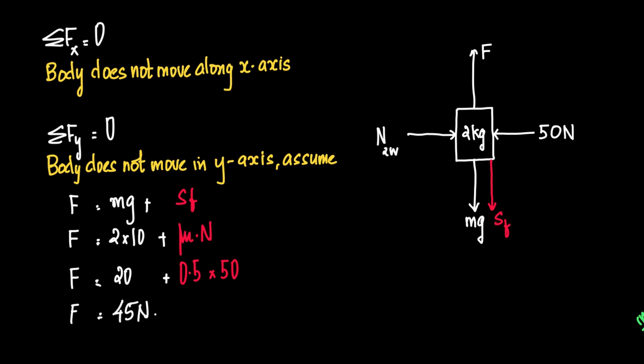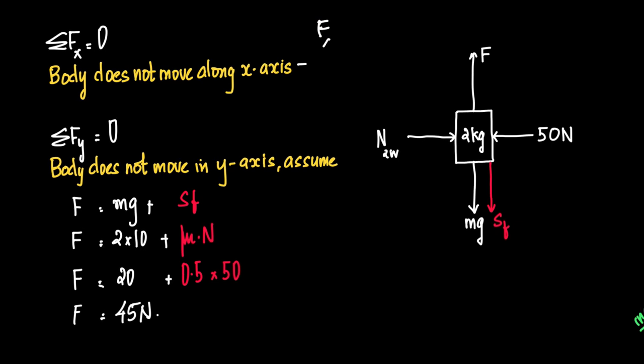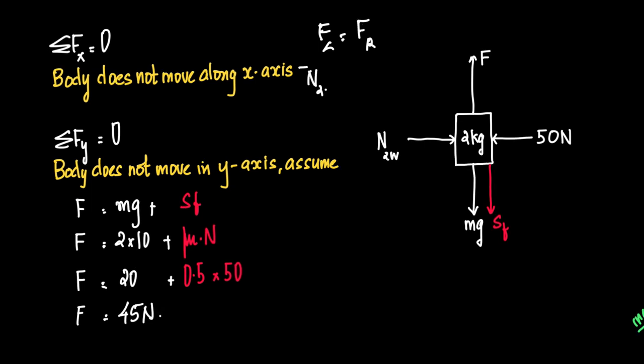We assume that the body is not moving in the x-axis. There is no motion along the x-axis. Therefore sigma fx will be equal to zero. If sigma fx equals zero, it simply implies that forces acting along the left should be equal to forces acting along the right. The only force acting along the left is normal reaction on 2 due to the wall, which equals the only force acting to the right which is 50 Newton. So this will be equal to 50 Newton.